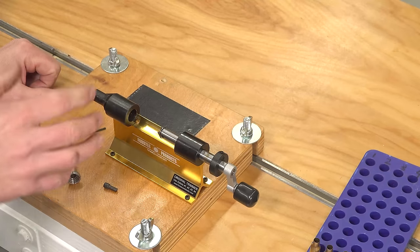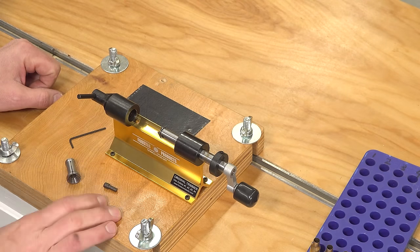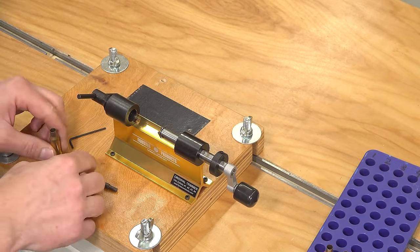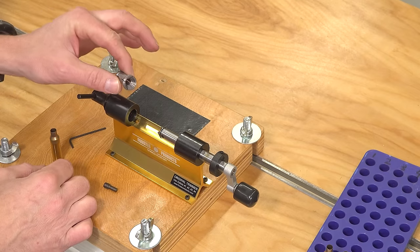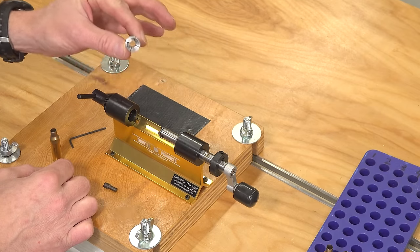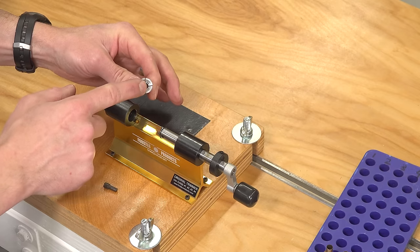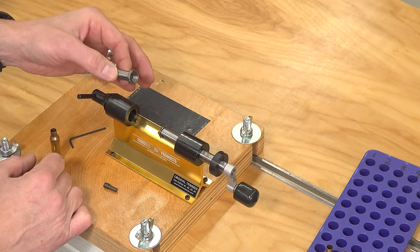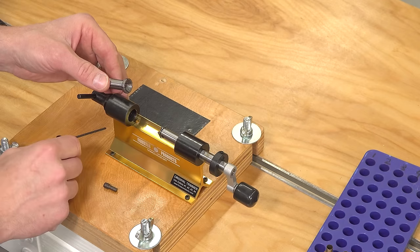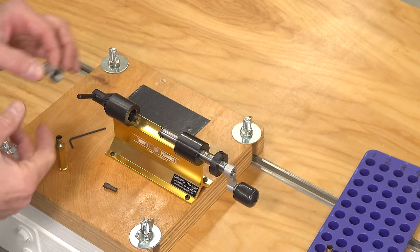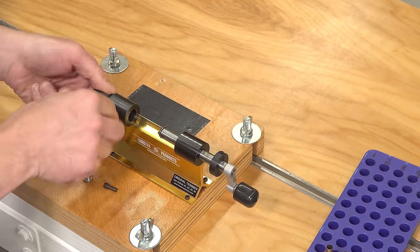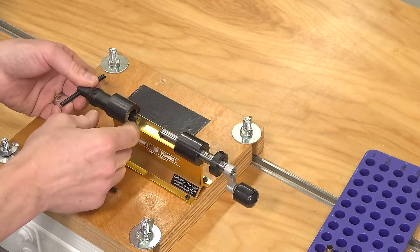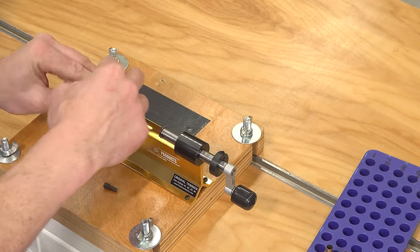Then used the included screws which just have an Allen head on them to secure it to the base. Now we can take a look at setting up the trimmer to trim some 6.5 Creedmoor. The first thing we need to do is figure out what collet we're going to use. I looked at the reference sheet, this uses collet number one. These are Brown and Sharp type collets. They're going to offer great repeatability. We're going to remove the collet holder, insert the collet into the holder, and then screw it in place.